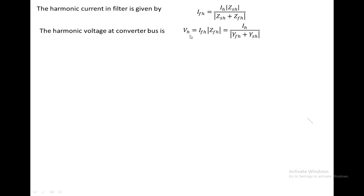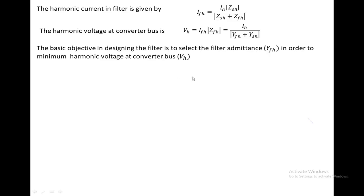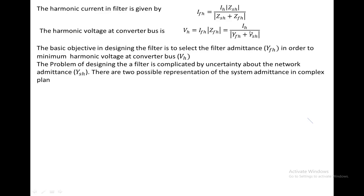From that circuit, the harmonic current in the filter is given by IFH = IH · ZSH / (ZSH + ZFH). VH is the voltage at the converter bus, which can be written as IH divided by (YFH + YS), where YFH is the admittance of the filter due to harmonics and YS is the admittance of the source due to harmonics. The main objective of filter design is that the harmonic voltage should be minimized. However, the source admittance is very difficult to measure due to uncertainty about the network.